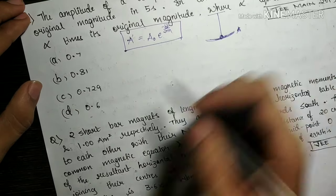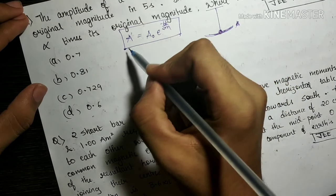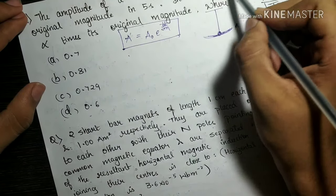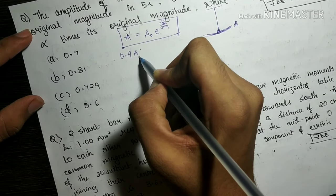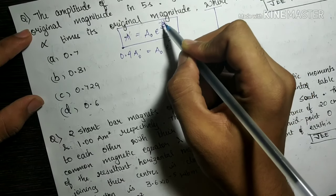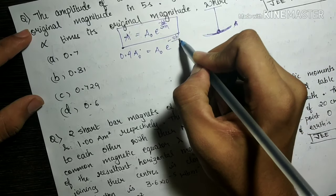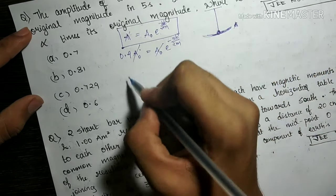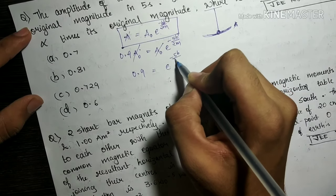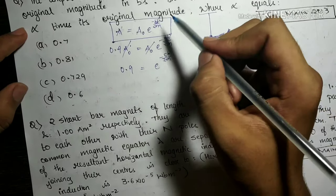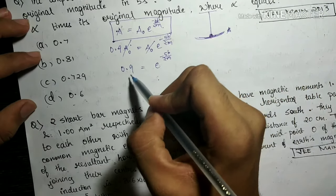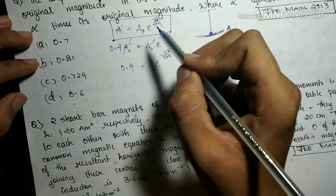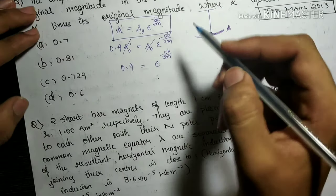In the first case, A = 0.9×A₀ at t = 5 seconds. Substituting: 0.9×A₀ = A₀×e^(−5b/2m). The A₀ terms cancel, giving 0.9 = e^(−5b/2m). Here b is the damping constant, m is the mass, and A₀ is the original maximum amplitude. We keep this result to use shortly.